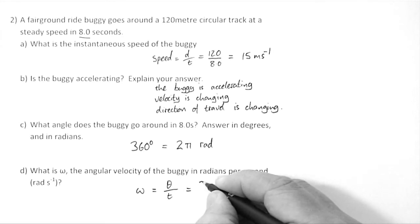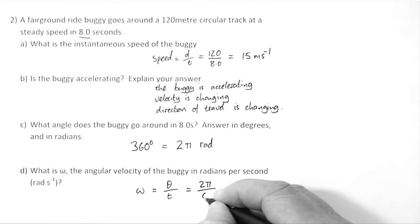the angle moved through is 2 pi radians. And one complete revolution takes 8 seconds, 8.0.